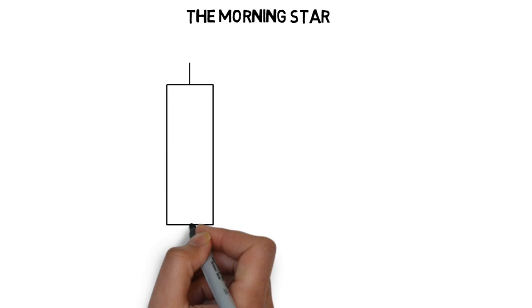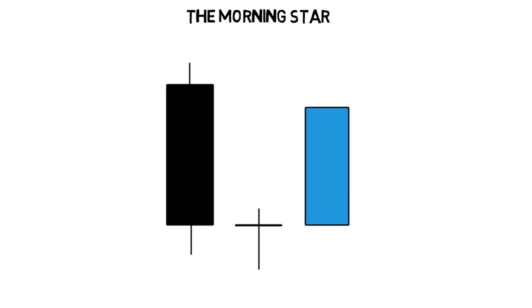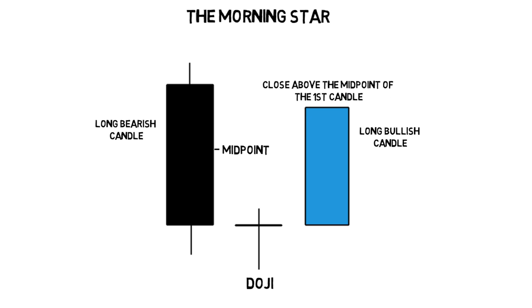The morning star is a three candlestick bullish reversal signal. The first candlestick is a long bearish one. The second candle is a small candle — perfectly it will be a doji representing indecision in the market. And the third one is a long bullish candle that closes above the midpoint of the first candle.